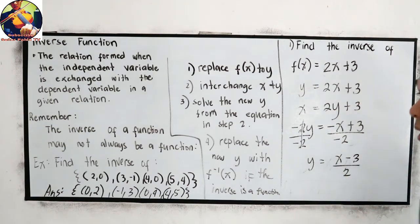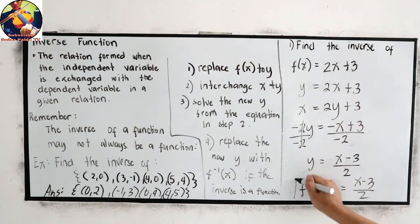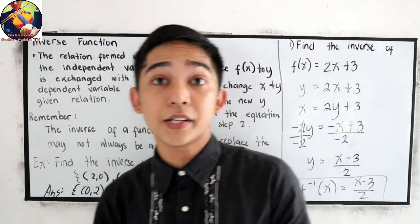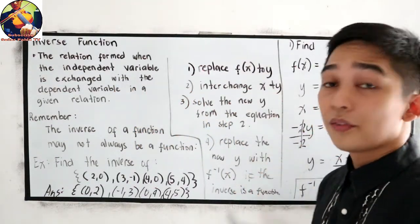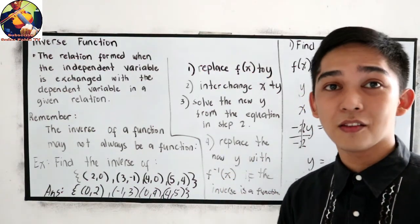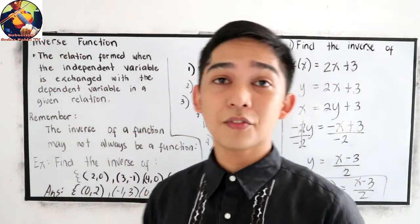This is now our inverse of function: f inverse of x = (x - 3)/2. This is now our final answer. That is the inverse of a function. Just apply our four basic steps. If you are on the right path in solving, then you can come up with the correct answer.